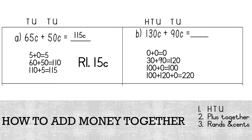Our last step, step 3, is we must divide into rands and cents. 115 cents equals how many rands? Remember, it takes 100 cents to make 1 rand. So 115 cents will give us 1 rand and 15 cents.